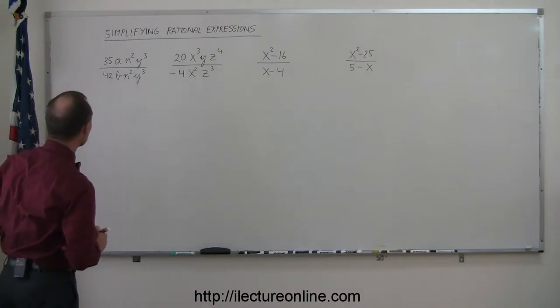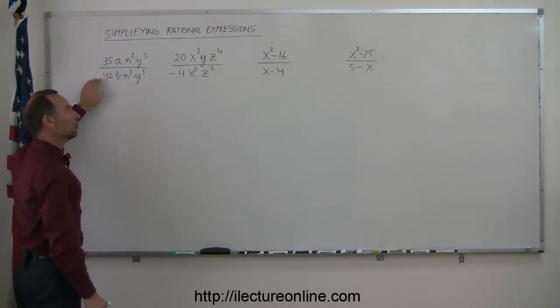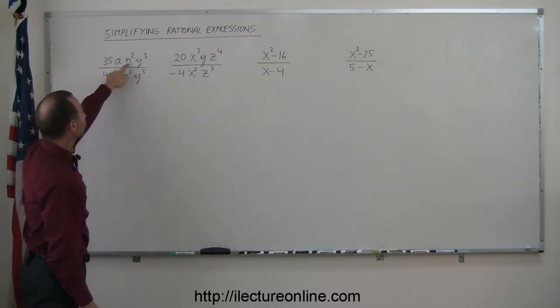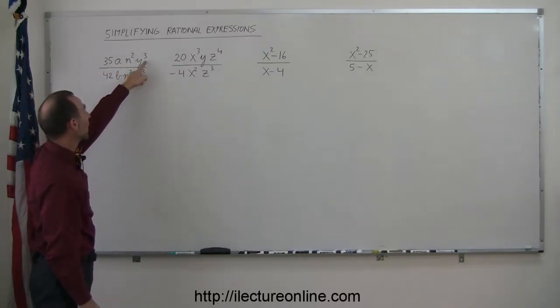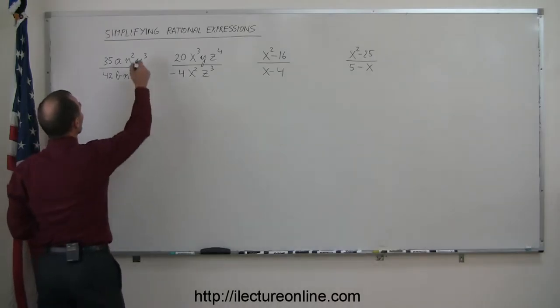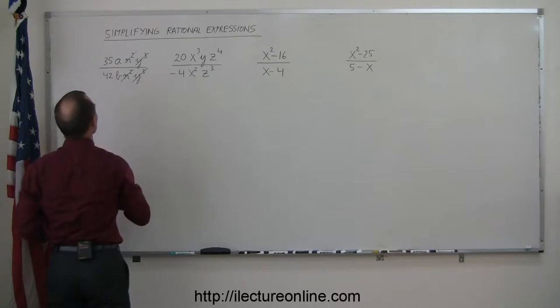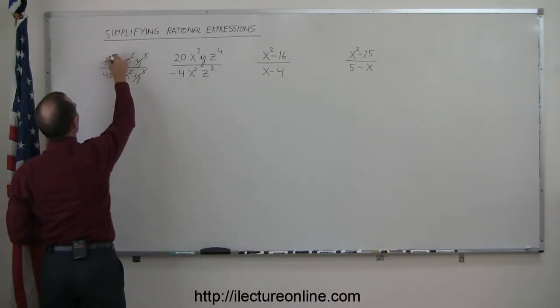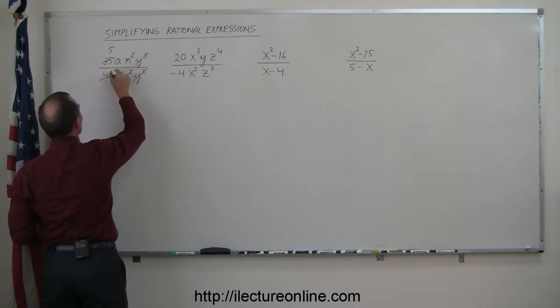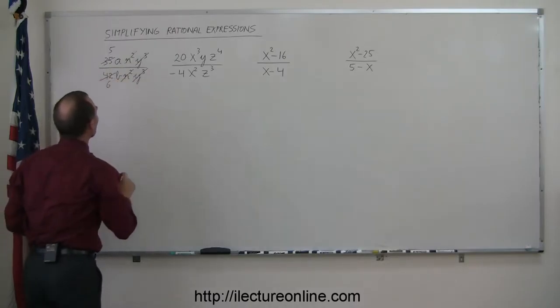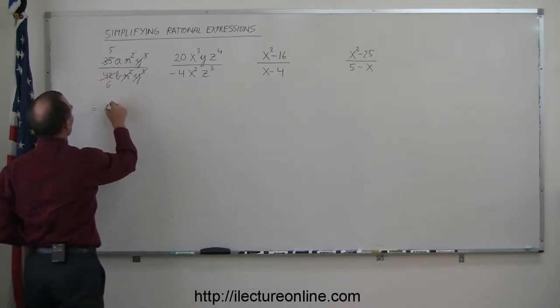All right, looking at our first one here, we see a 35 and a 42. They're both divisible by 7. I see an n-squared and an n-squared and I see a y-cubed and a y-cubed. So the n-squared in the numerator cancels out the n-squared in the denominator and the y-cubed here cancels out the y-cubed there. And 35 divided by 7 is 5, and 42 divided by 7 is 6. So this can then be simplified to 5a divided by 6b.